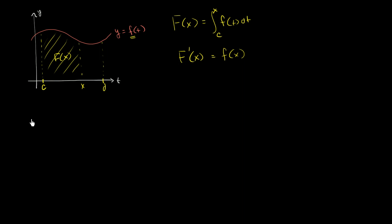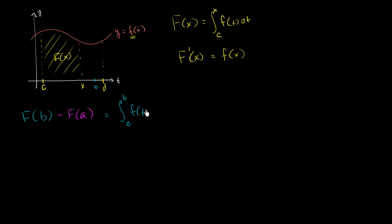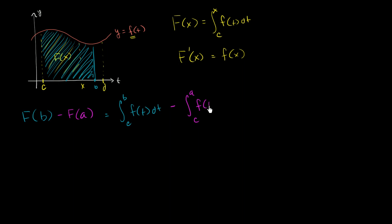So let's think about what capital F of b minus capital F of a is, where both b and a are also in this interval, and we're going to assume that b is larger than a. Capital F of b is going to be equal to the definite integral between c and b of f of t dt, which is just the area under the curve between c and b. And from that, we're going to subtract capital F of a, which is the integral between c and a of lowercase f of t dt.